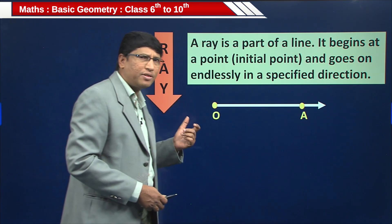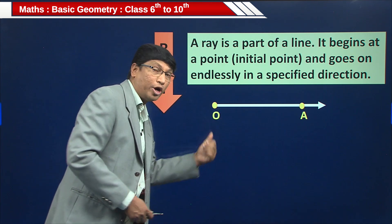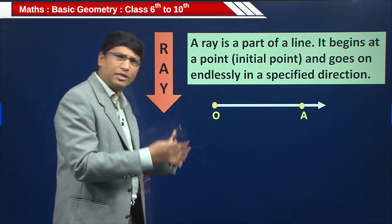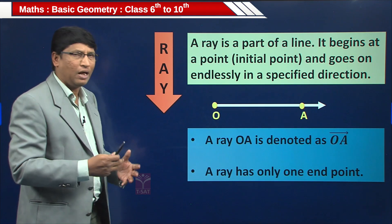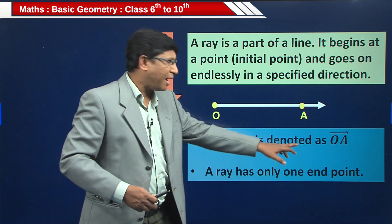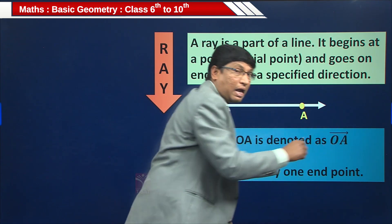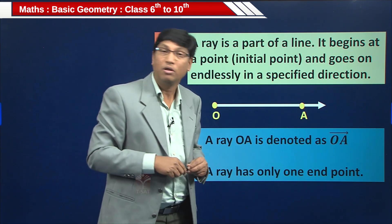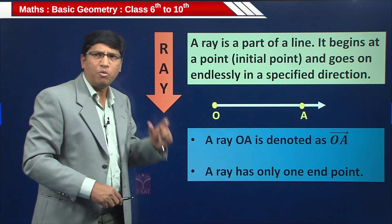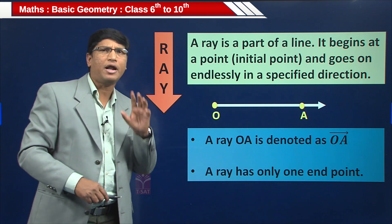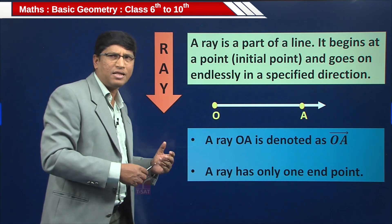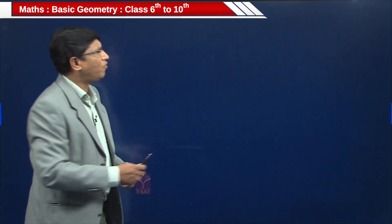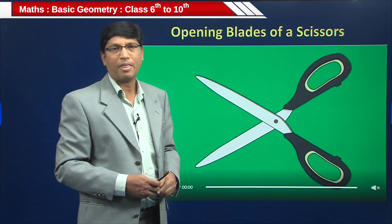A ray is a part of a line. It begins with one initial point — called the end point — and continues to an indefinite length in a specified direction. For example, ray OA starts from point O, moves in a specified direction, and you don't know its length — it is endless. Ray OA is denoted by writing OA with a single-headed arrow pointing in the direction of travel. A ray has only one end point.